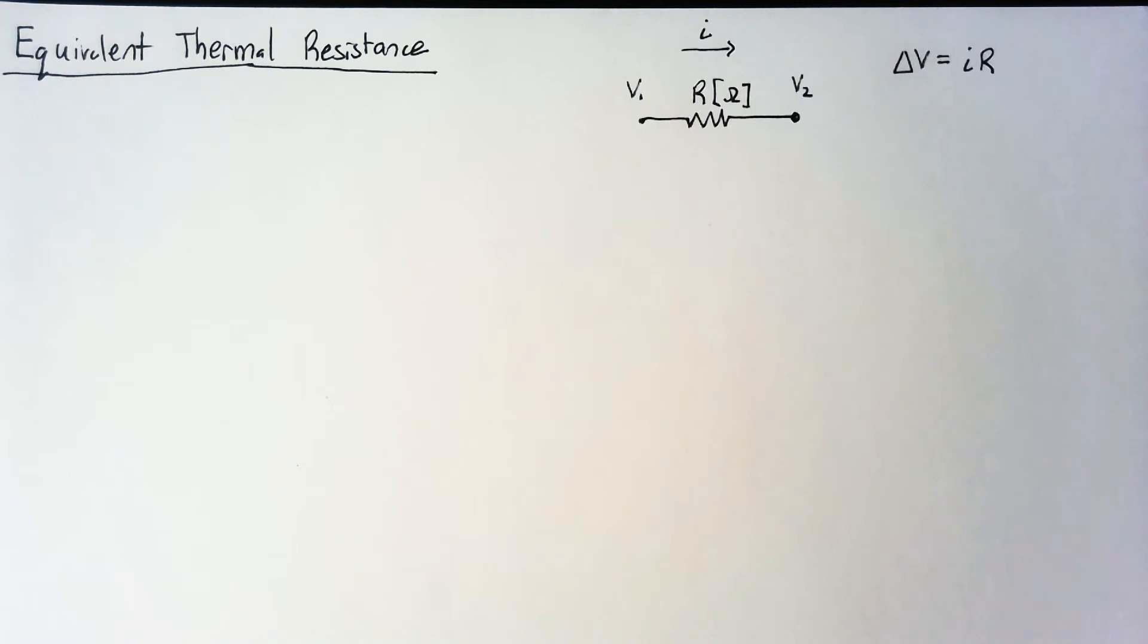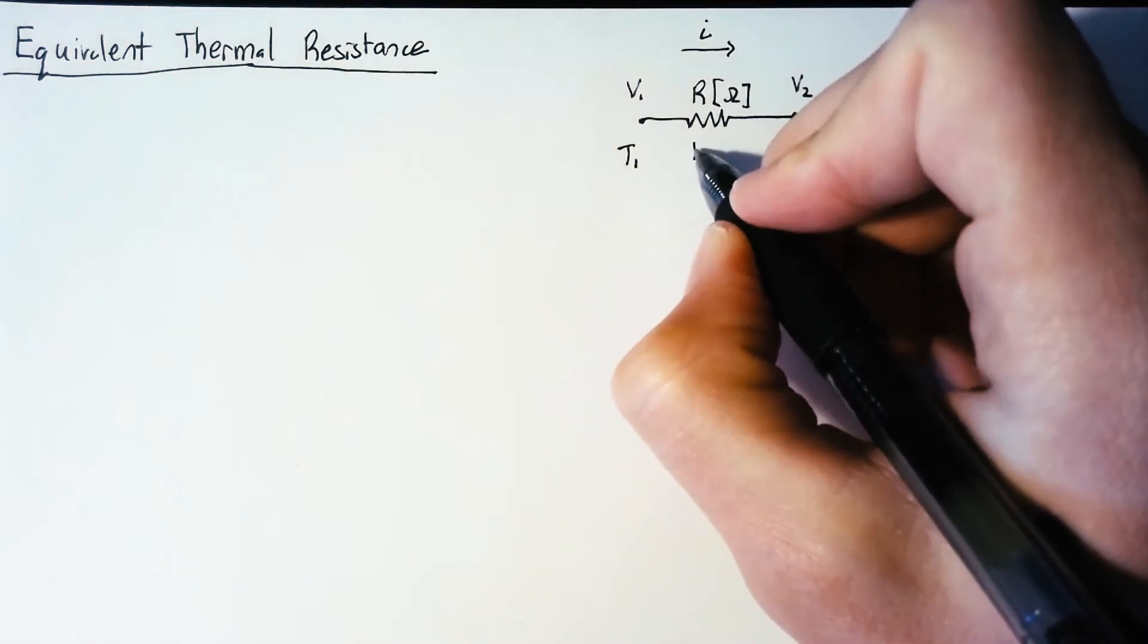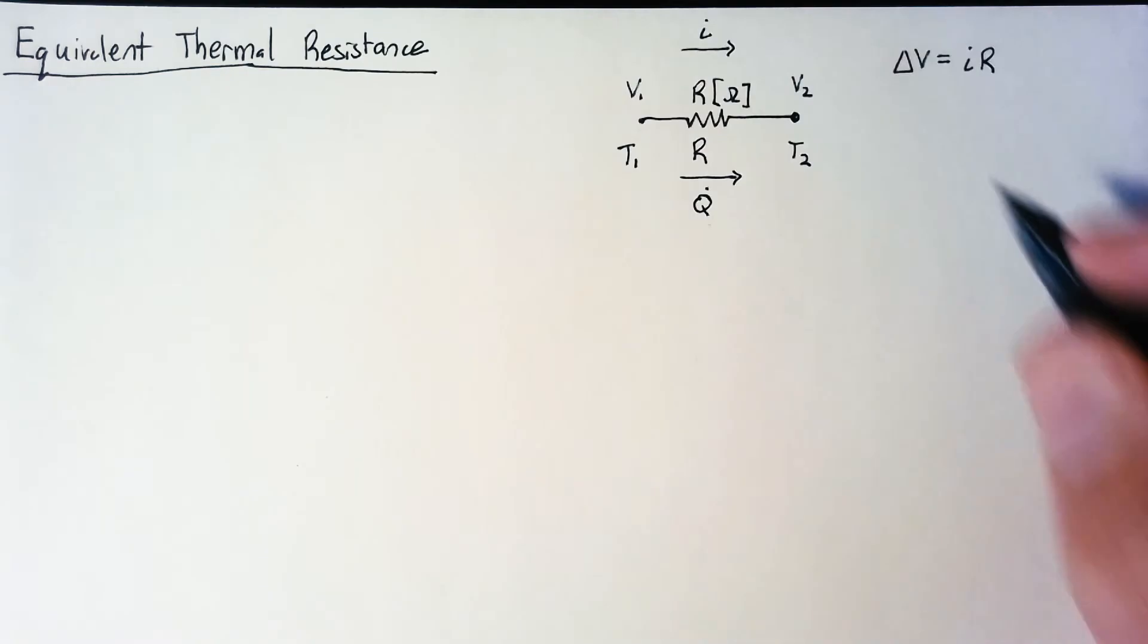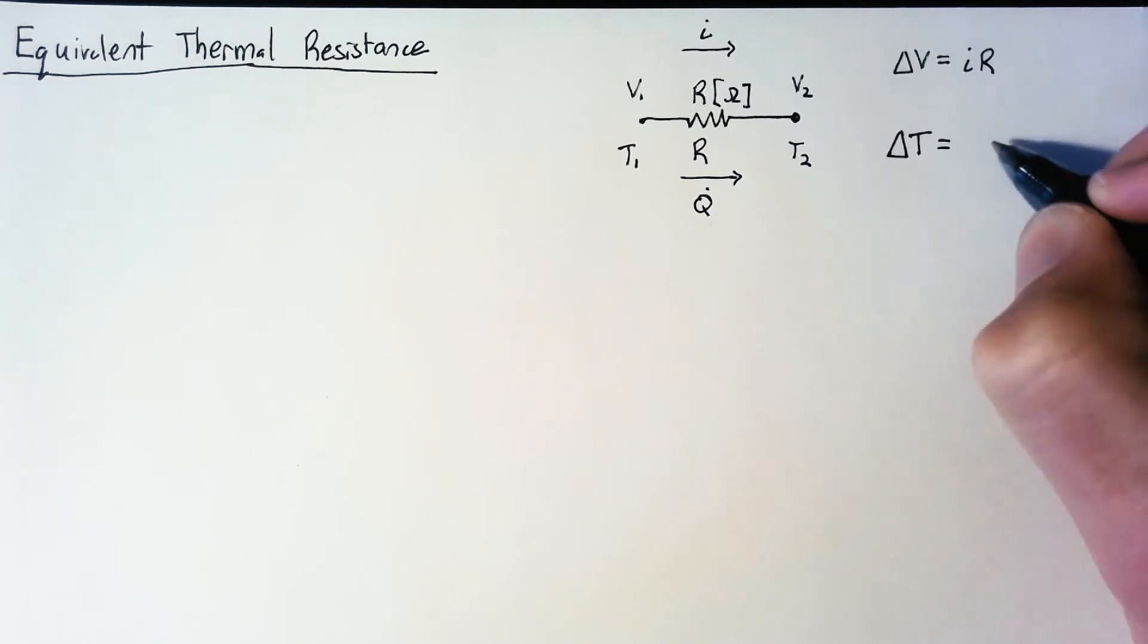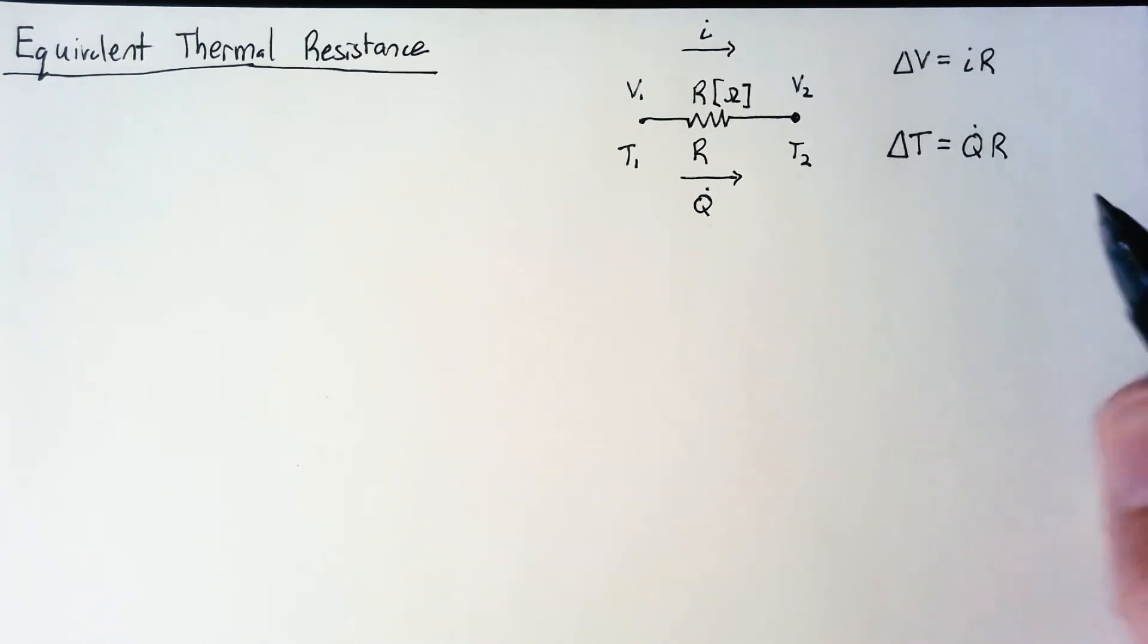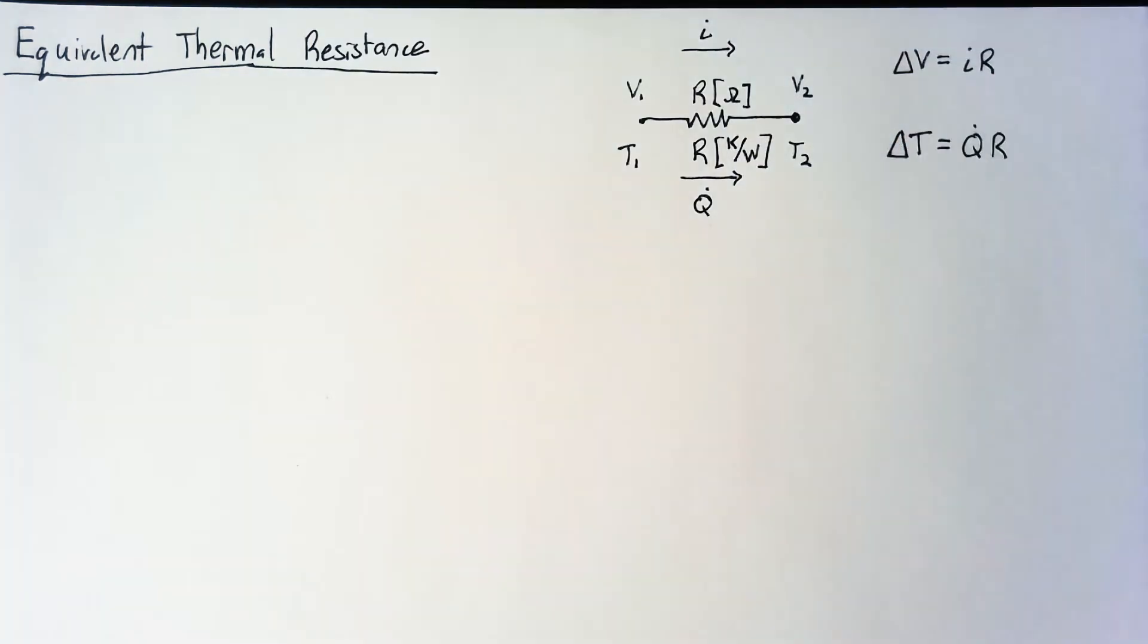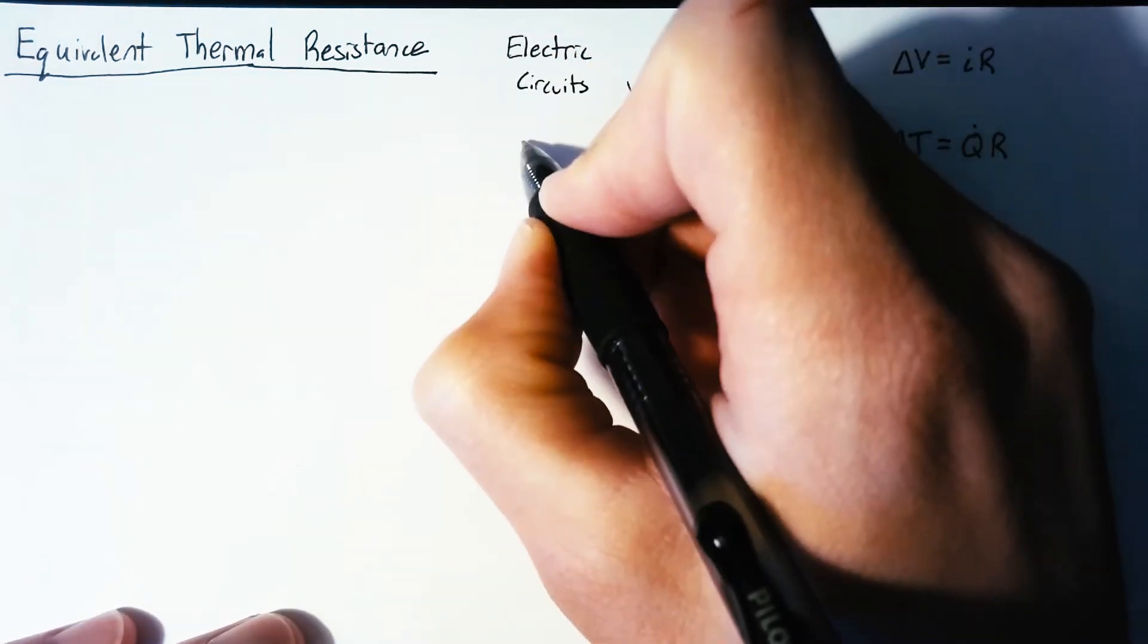So what can we do in heat transfer? Well, instead of voltage, we're going to have temperatures. We're still going to have a resistance. The units are going to be different, and we'll talk about that later. But instead of current, we're going to have our heat flow. And we want this to look basically the same. So we're going to have our delta T, our temperature drop, is going to be equal to our Q dot multiplied by R. And this tells us what the units of this resistance need to be, because we're trying to convert watts to Kelvin. So we need our resistance to be in units of Kelvin per watt. So the top of our little picture here is for electric circuits, and the bottom is for heat transfer.